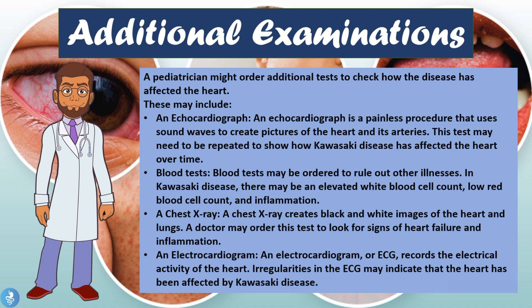The doctor might also order a chest x-ray, which creates a black and white image of the heart and lungs, to look for signs of heart failure and inflammation. Finally, an electrocardiogram — also known as an ECG — records the electrical activity of the heart, and any irregularities may indicate that the heart has been affected by Kawasaki disease. These are all the additional tests that can be run in these patients.